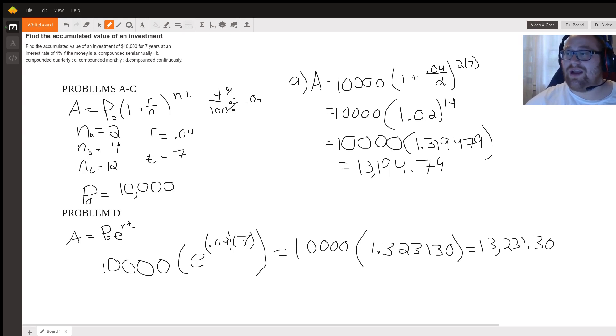Then you have that one plus r over n raised to the power of n times t. So again, n is going to change for parts A through C. Here I have part A done out. I did this preemptively before recording, so I'll walk you through it.